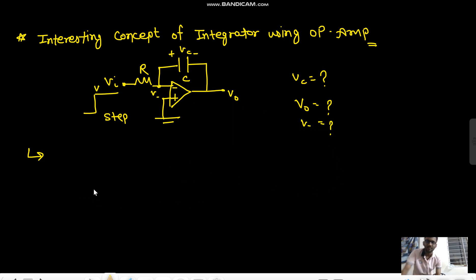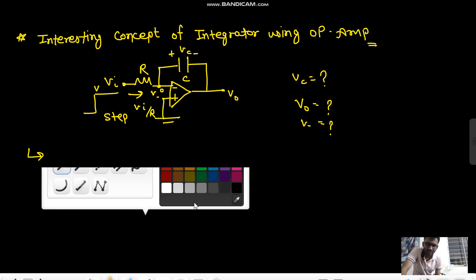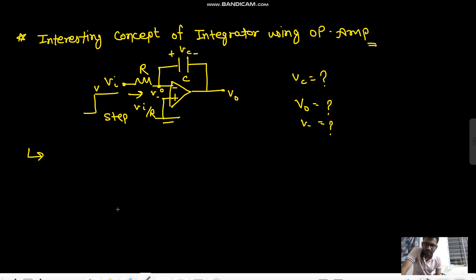This is a commonly asked question in interviews. First, it is in negative feedback, so the inverting input would be at virtual ground. This gives a constant current Vi/R, and this constant current would charge the capacitor.